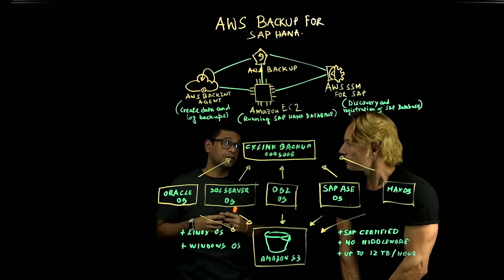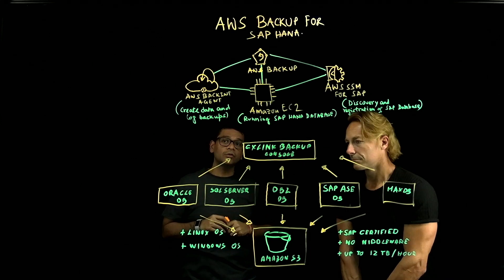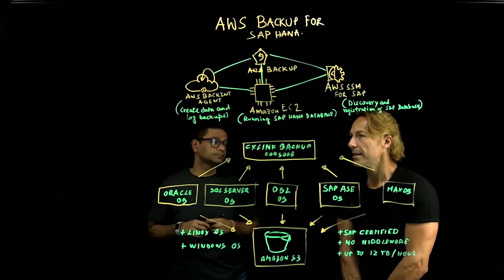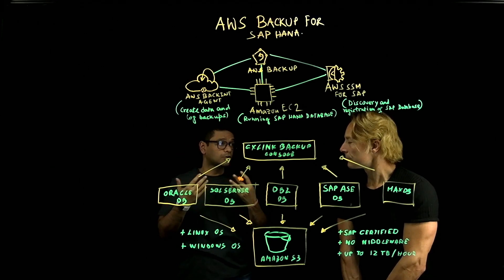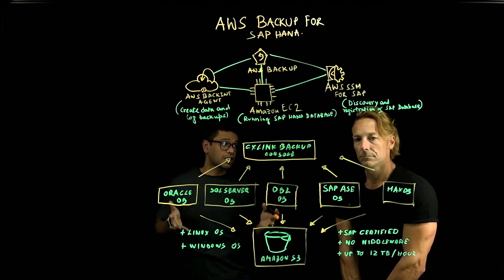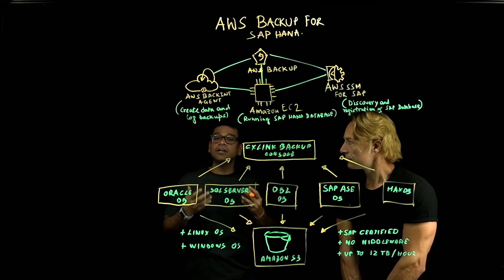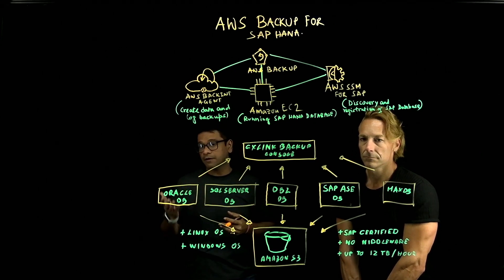CX-Link backup will be really useful for SAP and AWS customers running their SAP solutions on non-HANA databases. CX-Link backup is available on the AWS Marketplace. Together, AWS Backup for SAP HANA covers SAP HANA databases, while CX-Link backup covers the non-HANA databases, meaning we are covering the entire SAP database portfolio. Thank you all for watching. Please reach out to learn more about how to get started with AWS Backup for SAP HANA as well as CX-Link backup. Thank you very much.